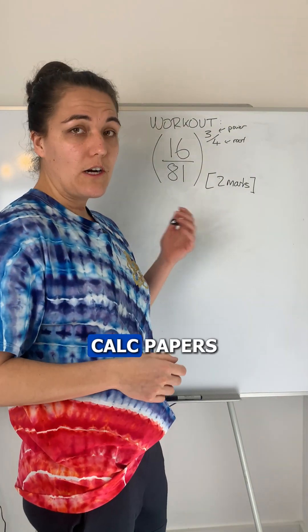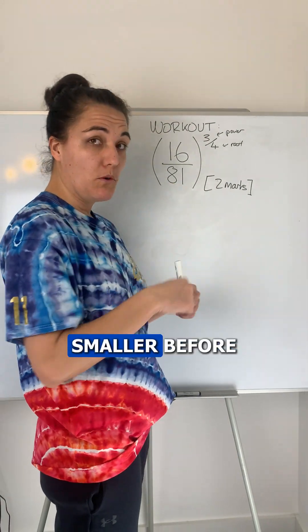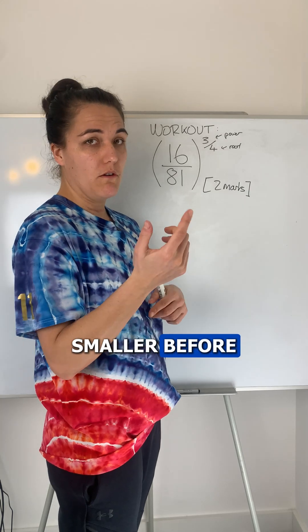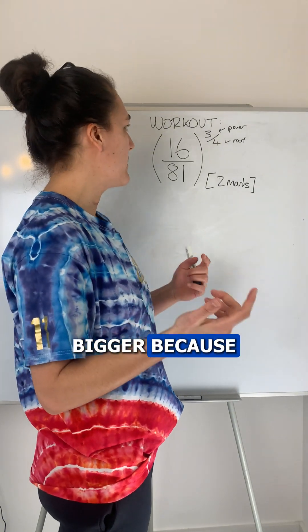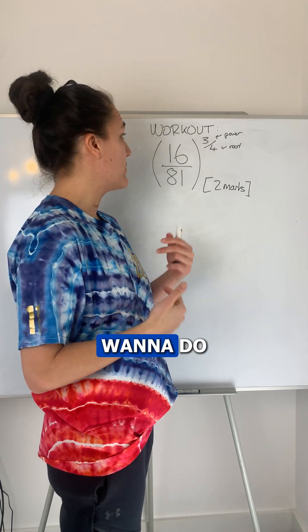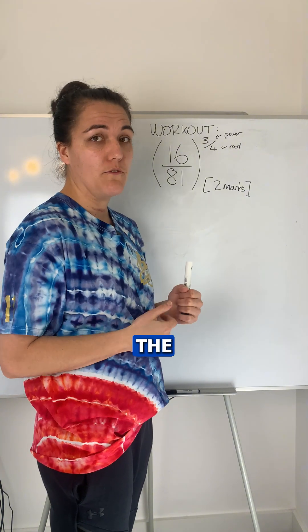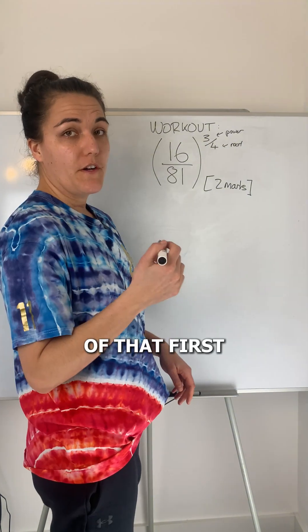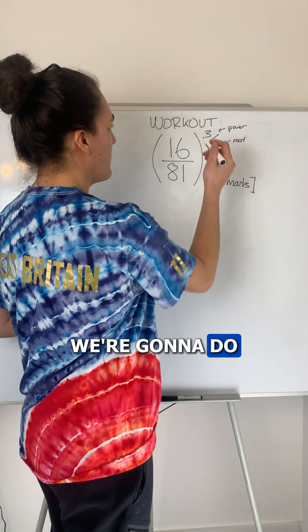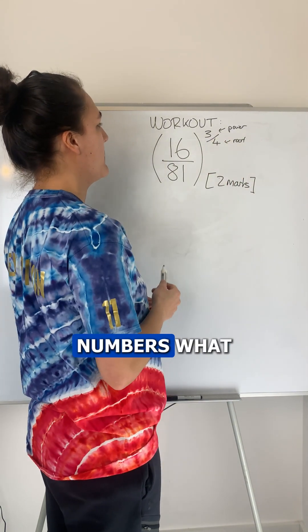On non-calculator papers, you want to make the numbers smaller before you make them bigger, because I wouldn't want to do 16 cubed and then take the fourth root of that. So first, we're going to do the fourth root of each of these numbers.